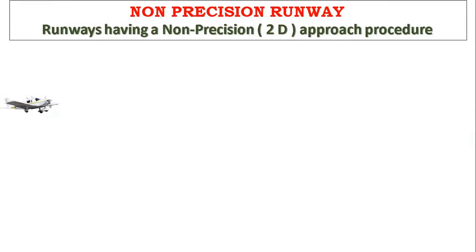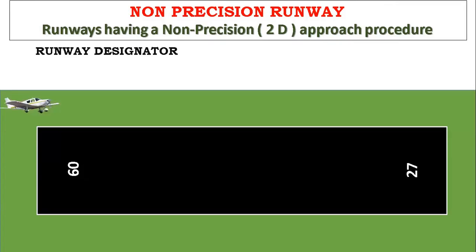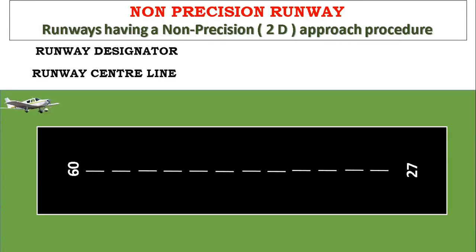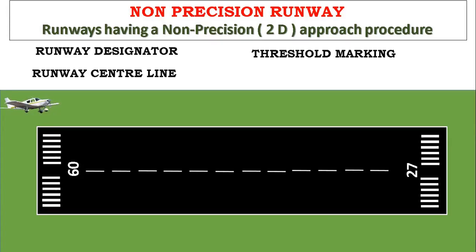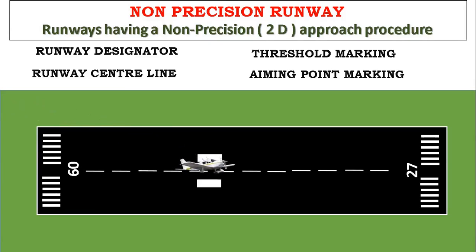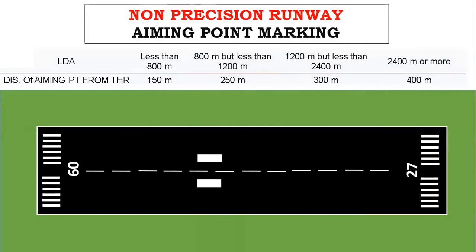Non-precision runway: a runway which has procedures that provide lateral navigation guidance only. It has a runway designator, runway centerline, threshold markings, and aiming point markings. Aiming point markings serve as a visual aiming point for a landing aircraft. These two rectangular markings consist of a broad white stripe located on each side of the runway centerline, approximately 400 meters from the landing threshold, for a landing distance available of 2400 meters or more.